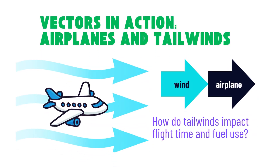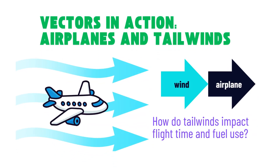Now, let's look at another situation. The plane is flying forward, but this time a strong wind, called a tailwind, is blowing in the same direction. Can you figure out how this tailwind will affect the plane's travel time and fuel use?